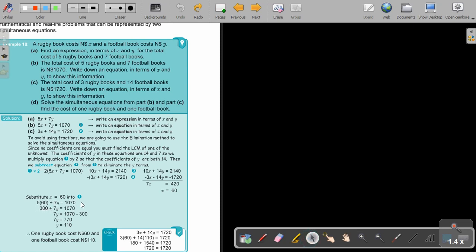Then I'm going to substitute the 60 into one of the equations and find my value of Y. Because it's a practical sum, answer the question. What was the question? Find the cost of one rugby book and one football book. So one rugby book costs $60, and one football book costs $110.